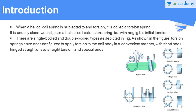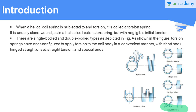To apply the torsion loadings to the helical coil torsion springs, we use different types of ends. Here you can see special ends, short hook ends, hinged ends, single offset ends, and straight torsion ends. These types of ends are used to apply the torsion loadings to the helical coil torsion springs in a convenient manner depending upon the type of application.